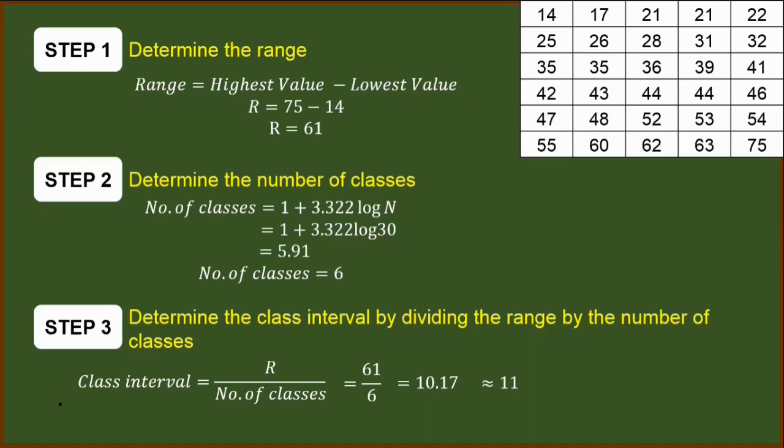So out of this computation, the important things that we have to carry over to the next slide are these items: the number of classes and the class interval. For step 4, we will be dealing with the FDT itself. Take note that the number of classes is 6 and the class interval is 11.